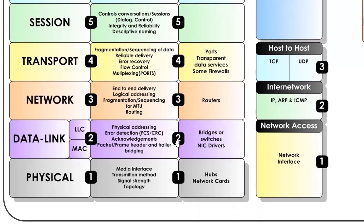The data link and physical layers are combined into the network access layer. The data link layer is responsible for physical addressing, error detection, acknowledgement, packet fragmentation, and bridging. The physical layer represents the medium used for transmission, including transmission method, signal strength, and topology.